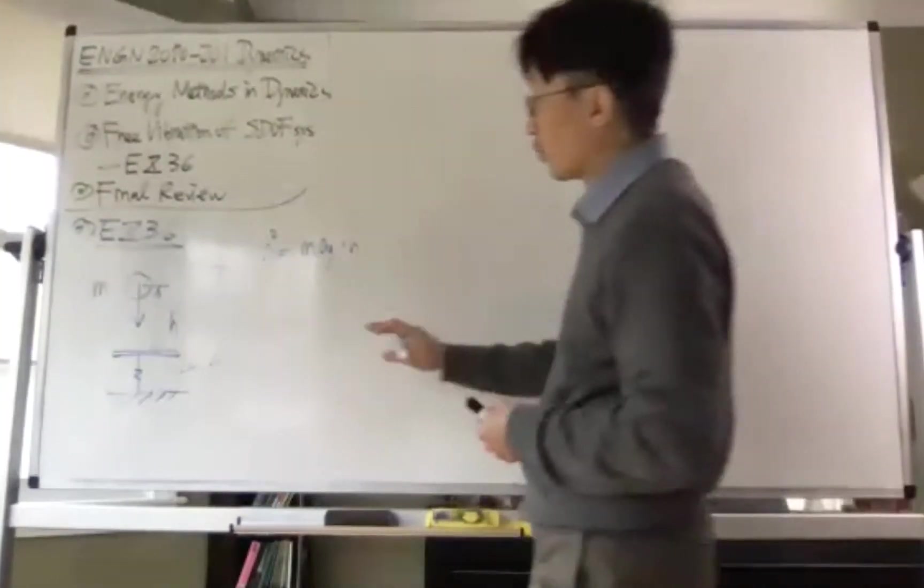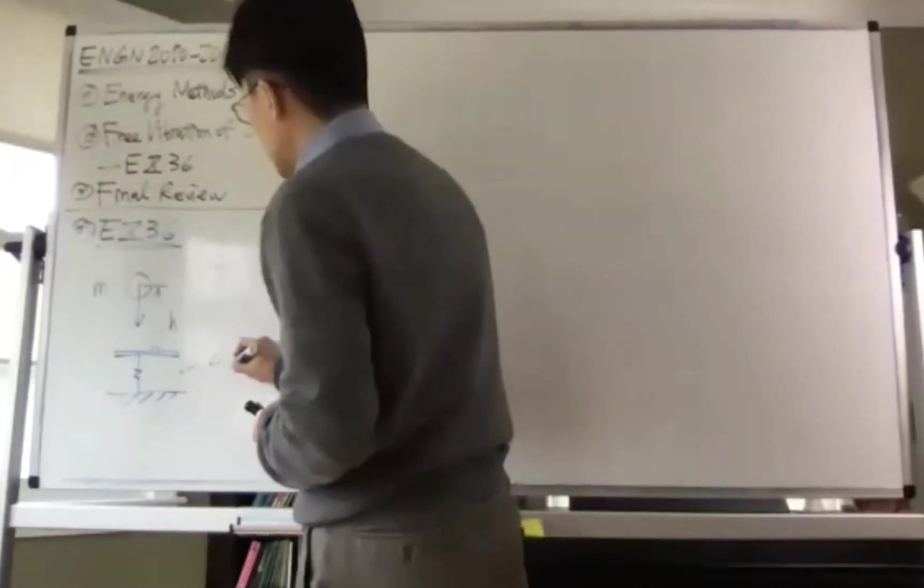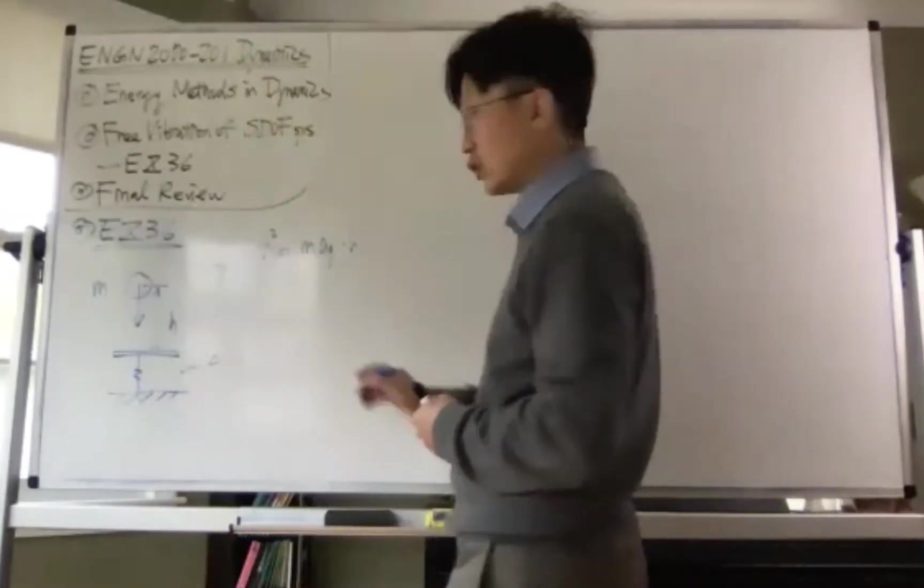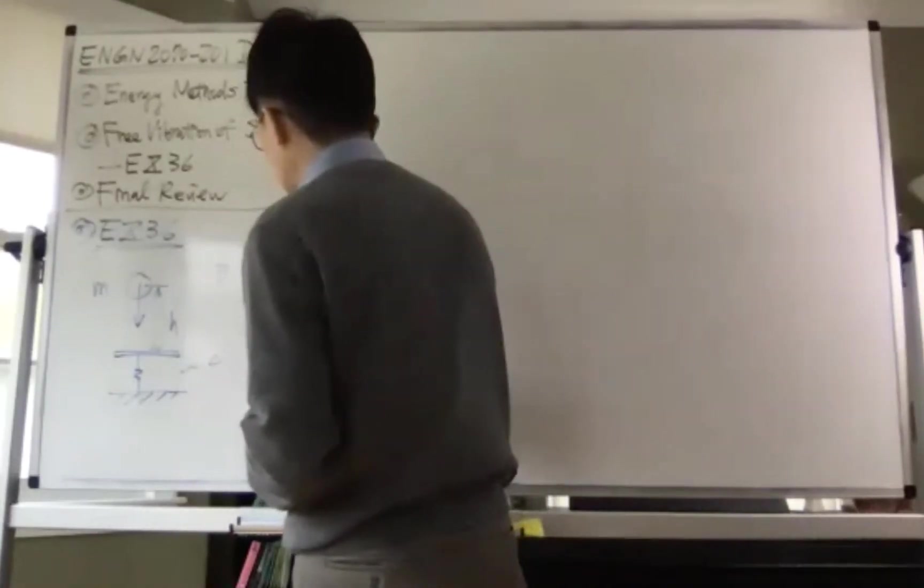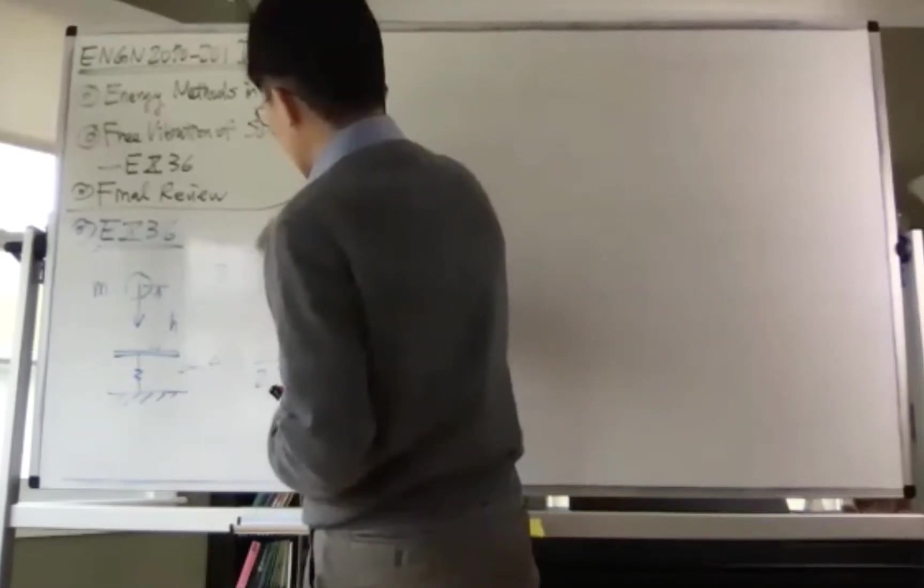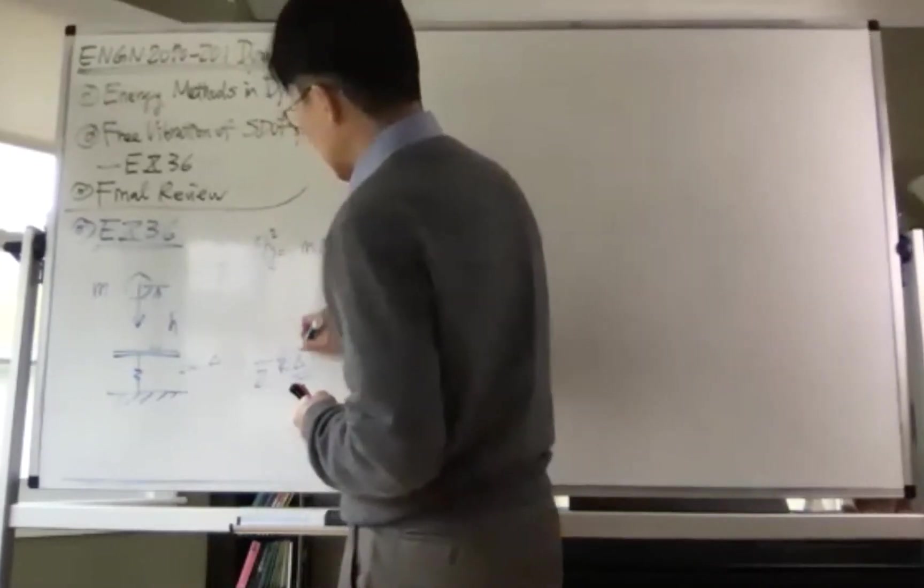So you can calculate the amount of energy, which is this one here, and this elastic potential energy here is one half of K times delta squared. So this way you can relate the velocity to the deflection easily this way.